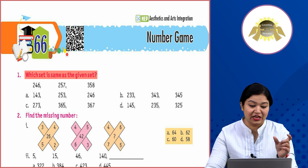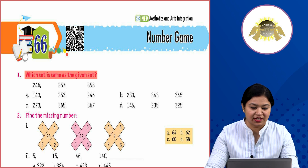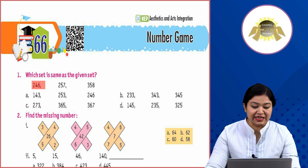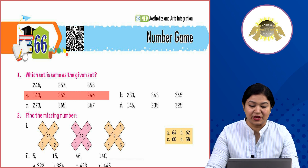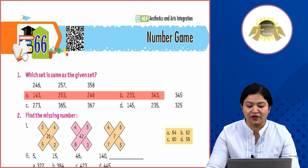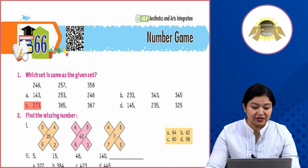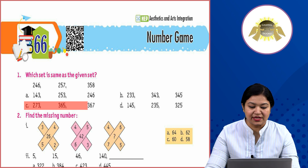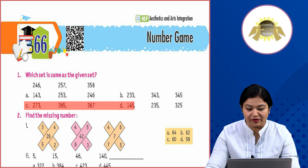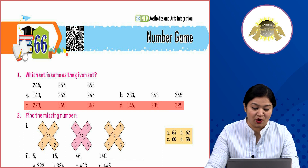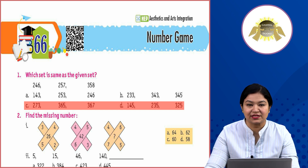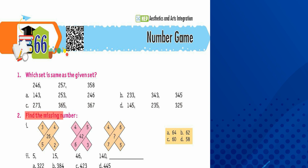First question: which set is the same as the given set? You have to find the matching series. The given series is 2:46, 2:57, 2:58. The options are A) 143, 253, 246; B) 233, 243, 245; C) 273, 365, 367; D) 145, 230, 325. The correct answer matching the series is option C: 273, 365, 367.